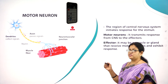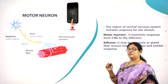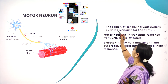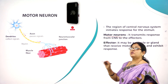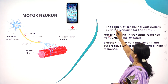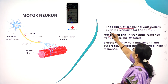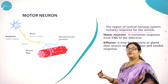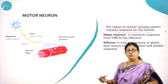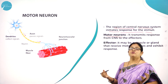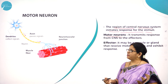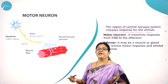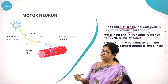In the last session we studied about the receptor and the sensory neuron. Now let us study about the motor neuron. The region of central nervous system initiates response for the stimuli. The neuron, which is the structural and functional unit of the nervous system, comprises of the cell body, the axon and the dendrite.